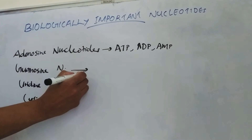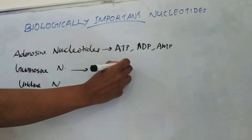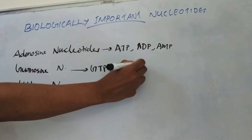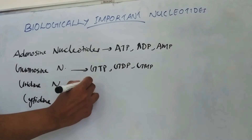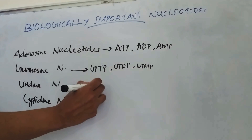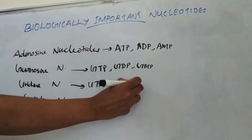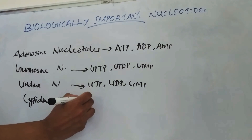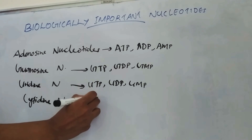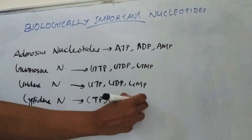Then guanosine nucleotides, which include GTP, GDP, and GMP. Uridine nucleotides include UTP, UDP, and UMP. Cytidine nucleotides include CTP, CDP, and CMP.